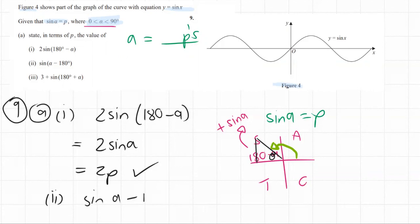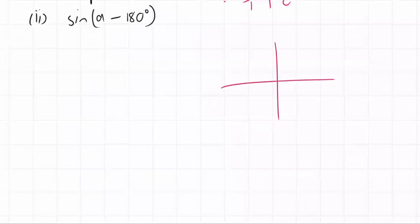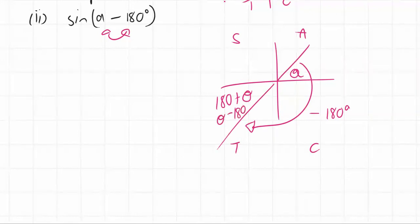Sine of a minus 180 degrees. So this one, the way I draw this using my CAST diagram is if we had an acute angle a under 90 degrees, it'd be here. And then I minus 180 from that gets us down to the negative. So we end up in our CAST diagram in the third quadrant, and that one is 180 plus theta, but we also know that theta minus 180 is also correct. And this one tan is positive, so that means that sine is negative. So it's just negative sine a, and therefore sine a is p, so it's negative p.